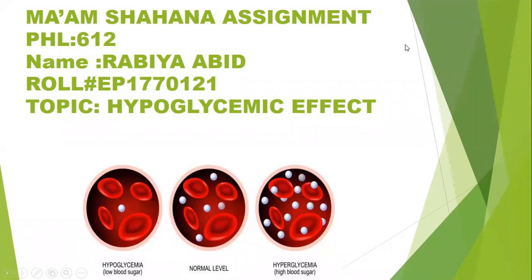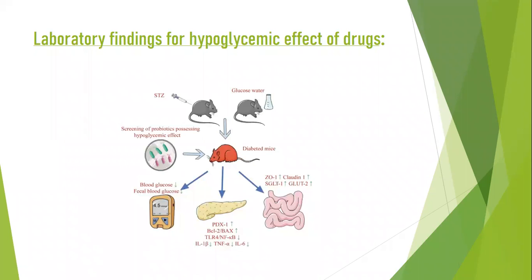Bismillahirrahmanirrahim and Assalamu Alaikum. My name is Rabia Avid and my roll number is EP 1170121. My topic is hypoglycemic effects. First of all, I will talk about the laboratory findings for the hypoglycemic effect of the drug, and how we will prepare and discuss the hypoglycemic effect.